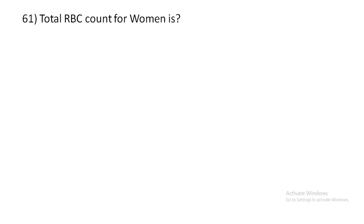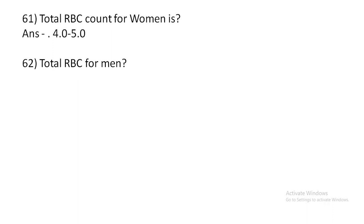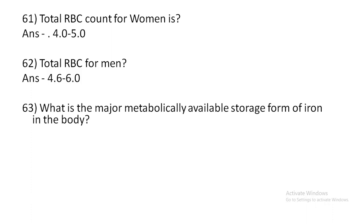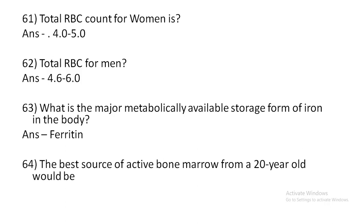Total RBC count for women is 4.0–5.0 million. Total RBC count for men is 4.6–6.0 million. The major metabolically available storage form of iron in the body is ferritin.